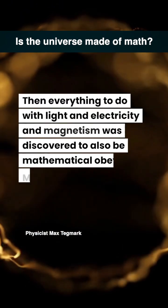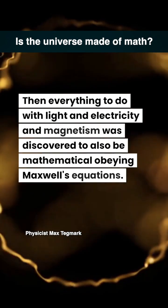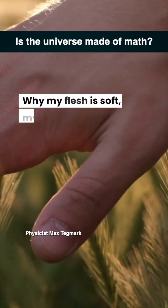Then everything to do with light and electricity and magnetism was discovered to also be mathematical, obeying Maxwell's equations. But Maxwell still had no clue, for example, why the properties of matter were the way they were—why my flesh is soft and my fingernail is hard.